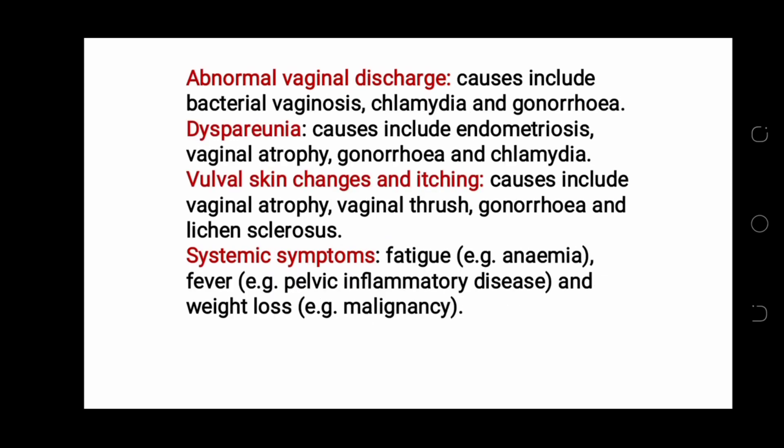Ask about abnormal vaginal discharge, which can be due to bacterial vaginosis, chlamydia, and gonorrhea. Painful menses and dyspareunia — causes include endometriosis, vaginal atrophy, gonorrhea, and chlamydia. Ask about vaginal and vulval skin changes and itching, which may be due to vaginal atrophy, vaginal thrush, gonorrhea, and lichen sclerosus.